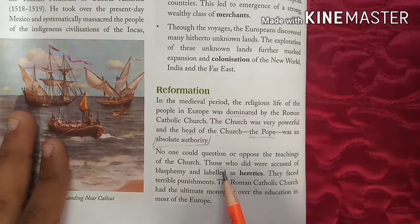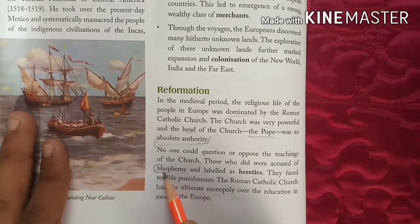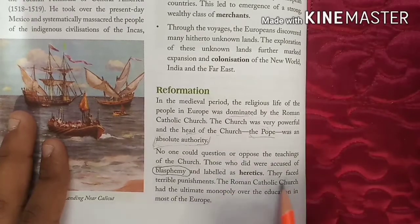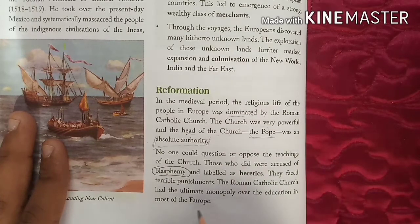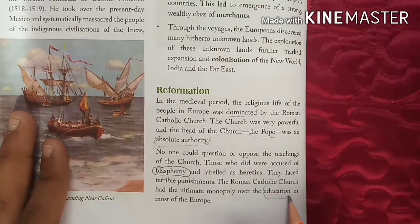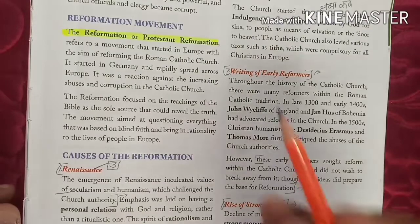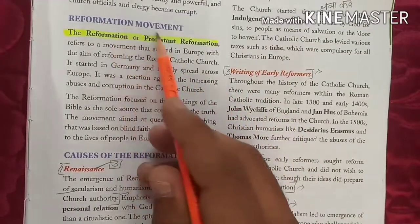The Roman Catholic Church had the ultimate monopoly over education in most of Europe. The movement that started to end this authority was called the Reformation movement or Protestant movement. The Reformation or Protestant Reformation refers to a movement that started in Europe with the aim of reforming the Roman Catholic Church. It started in Germany and rapidly spread across Europe.